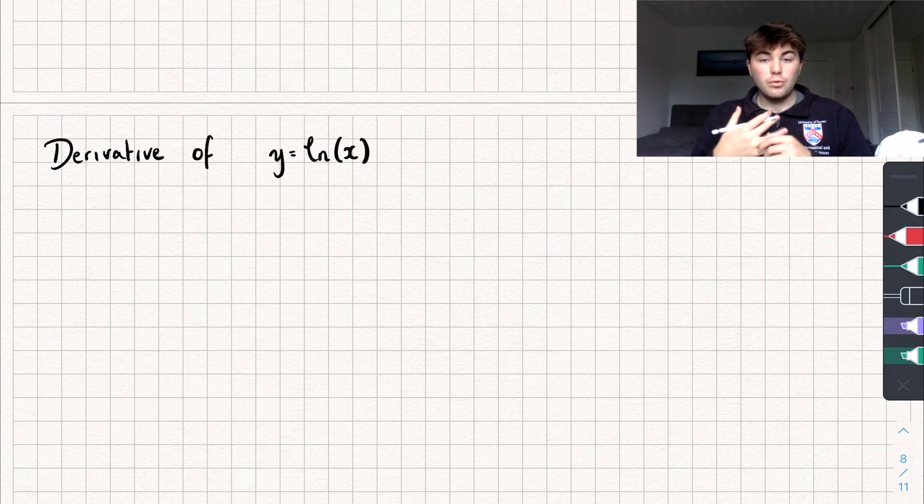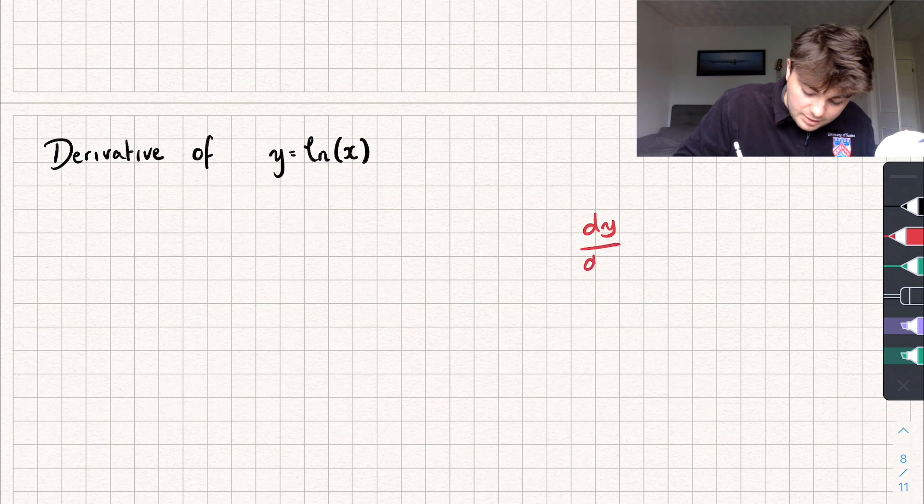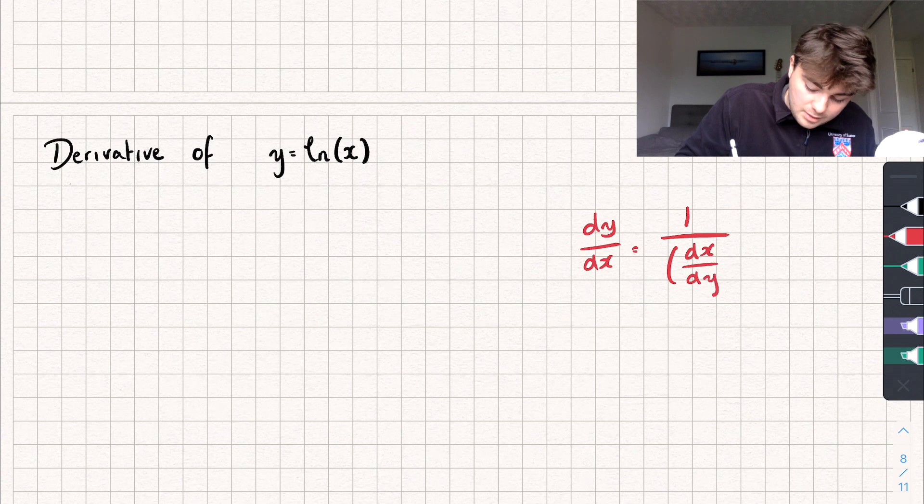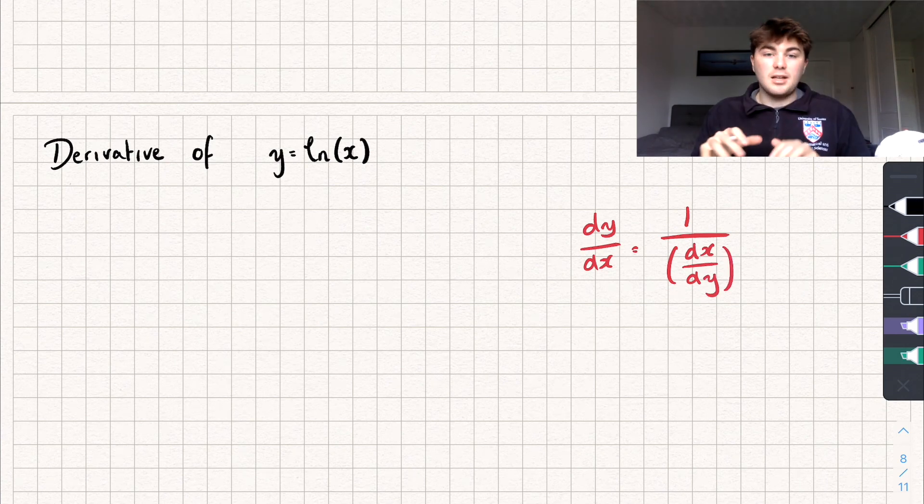And to do this we're going to need to know a rule that comes from the chain rule and it says that dy by dx is equal to 1 over the derivative of x with respect to y. And we're going to use that in a second.